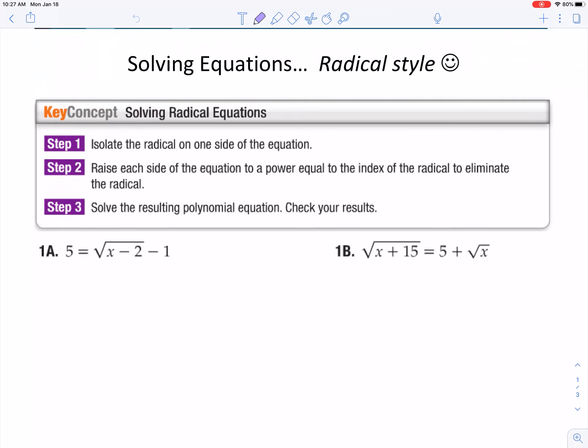It says to first isolate the radical on one side of the equation. That means to the best of your ability, get one side of the equation so that the radical sign is by itself. So like on 1A, I want to get this radical piece to be by itself, so I'm going to get rid of the minus 1 by adding 1 to both sides.